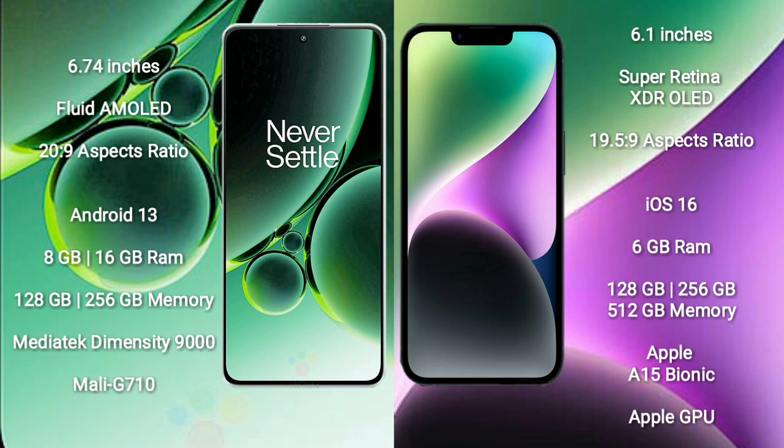OnePlus Nord 3 runs on the Android 13 operating system; iPhone 14 runs on iOS 16. OnePlus Nord 3 comes with 8GB or 16GB RAM, 128GB or 256GB internal storage, a MediaTek Dimensity 9000 processor, and Mali-G710 GPU. iPhone 14 comes with 6GB RAM, 128GB, 256GB, or 512GB internal storage, an Apple A15 Bionic processor, and Apple's own GPU.